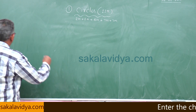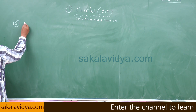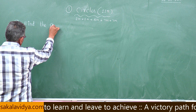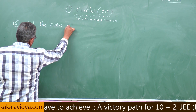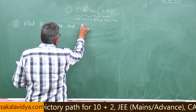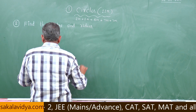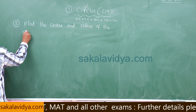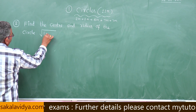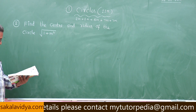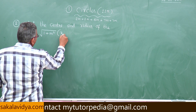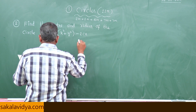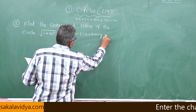Second problem: find the centre and the radius of the circle given by √(1+m²) · (x² + y²) − 2Cx − 2mCy = 0.